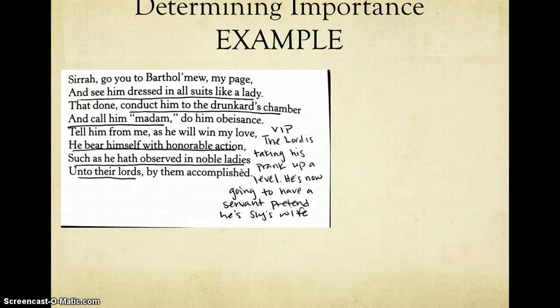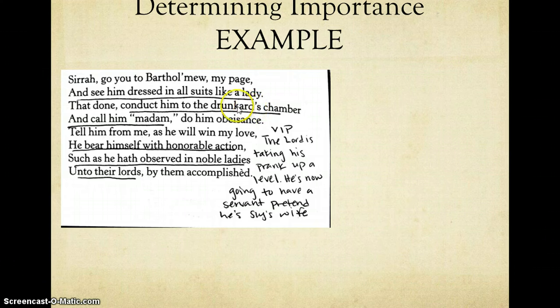Here's my example. So I'm going to look again at a specific part in the play where the Lord is talking, and he's talking to his servants, and he's talking specifically to one servant named Bartholomew. And he's asking him to dress like a lady, to go into Sly's chambers, or where Sly is staying, that everyone should call him Madam. So the servant Bartholomew is becoming a female, or dressing like a female. And to bear himself with honorable action, such as he has observed noble ladies unto their Lord. So he's essentially saying, act like Sly's wife.